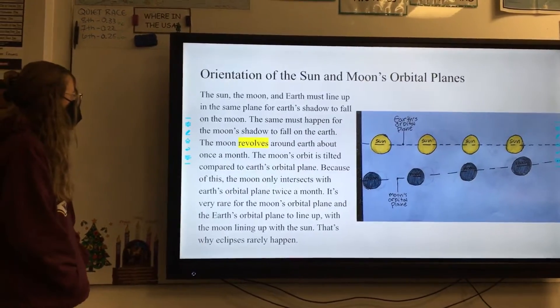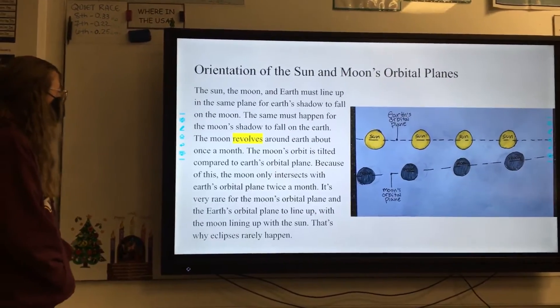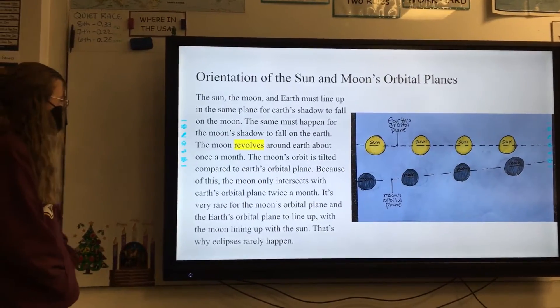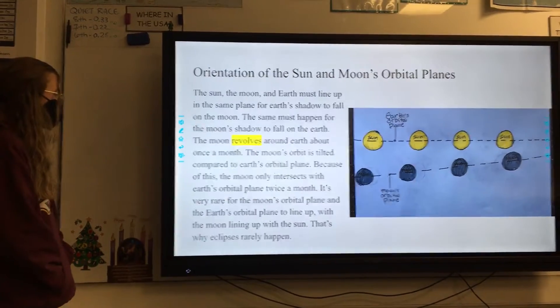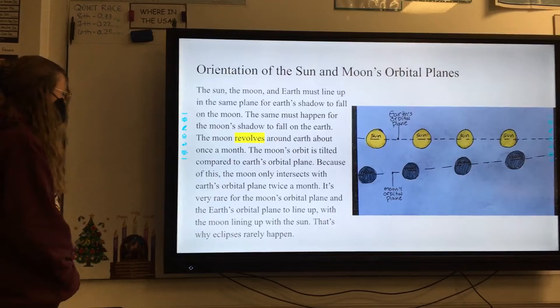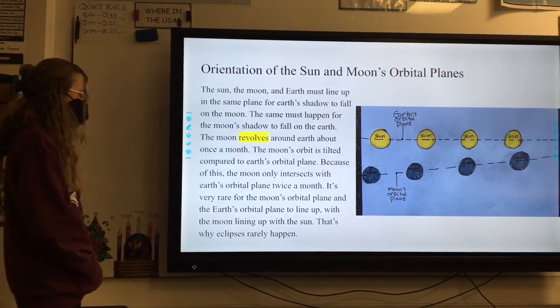The Moon's orbit is tilted compared to Earth's orbital plane. Because of this, the Moon only intersects with Earth's orbital plane twice a month. It's very rare for the Moon's orbital plane and Earth's orbital plane to line up with the Moon lining up with the Sun. That's why eclipses rarely happen.